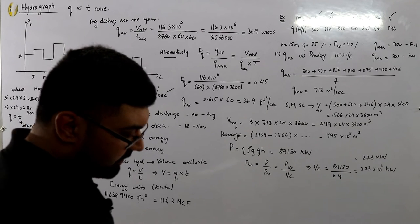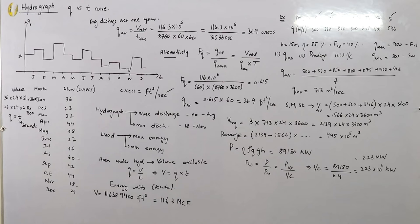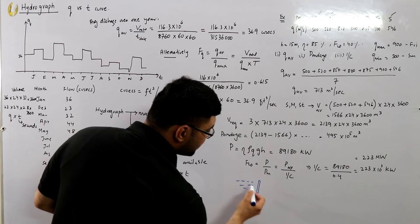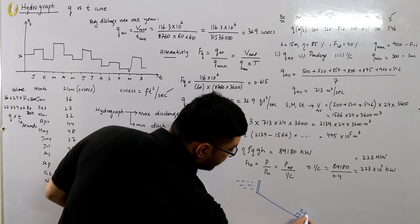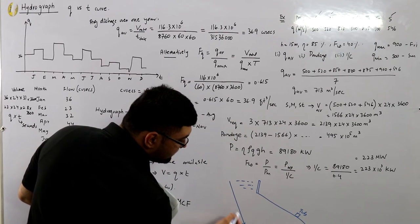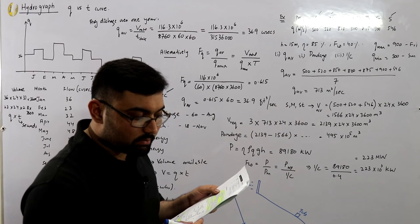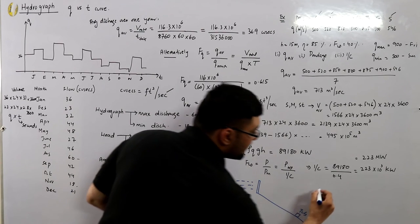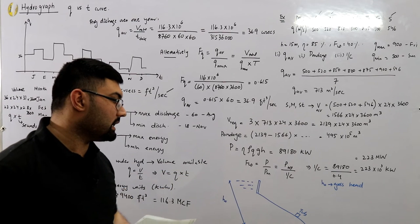The effective head is the head from the center of the intake to the center of the turbine. Looking at the diagram: the dam has a maximum reservoir level; water flows down through the penstock to the turbine, and the tail race represents the minimum level. The gross head H₀ is the vertical distance between the maximum water level in the reservoir and the tail race.